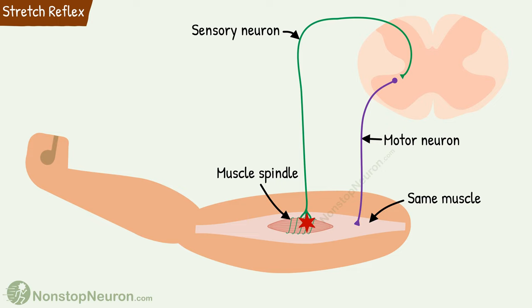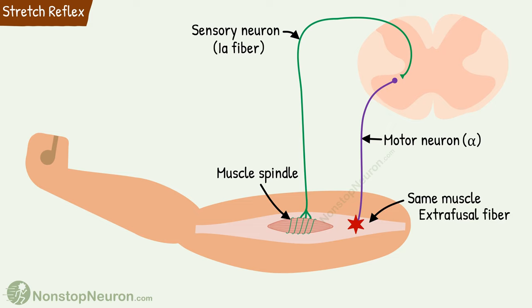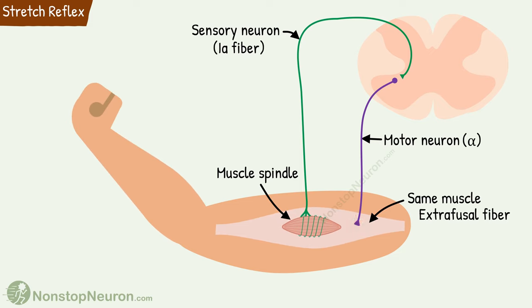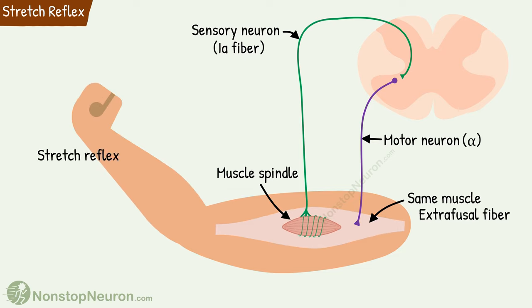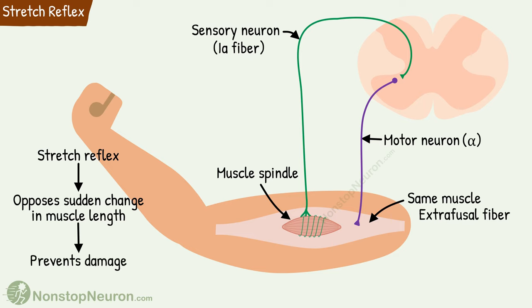Due to this stretching, the firing rate of the sensory nerve endings increases. By type 1a fibers, these signals are carried to the spinal cord, where they make synapse directly with the alpha motor neuron of the same muscle. Upon getting excited by the sensory neuron, these alpha motor neurons take impulse to the extrafusal fibers of the same muscle from where the stimulus first came. Stimulation of extrafusal fibers causes muscle contraction, which prevents further stretching. On sudden un-stretching, the opposite occurs and there will be reflex relaxation. Thus, the stretch reflex opposes a sudden change in muscle length, preventing damage from a sudden change in the length of the muscle.